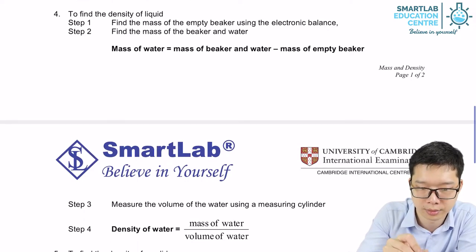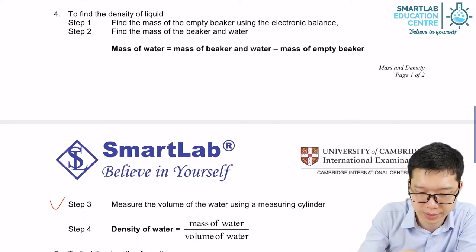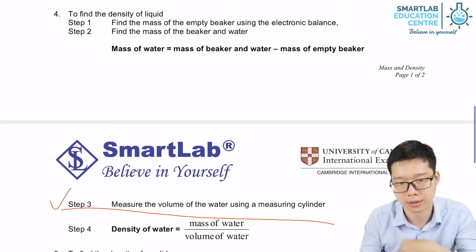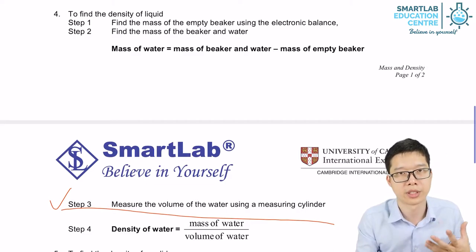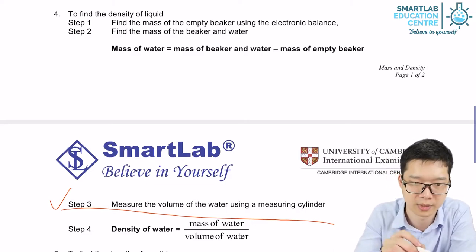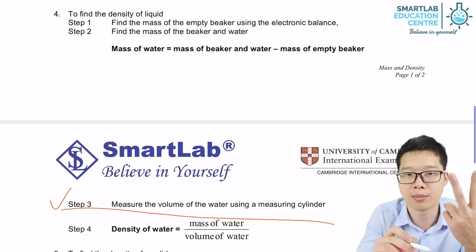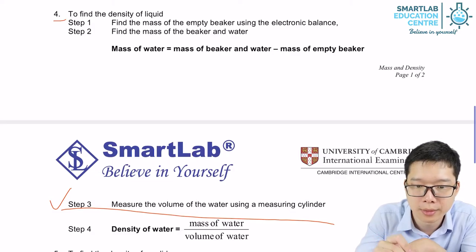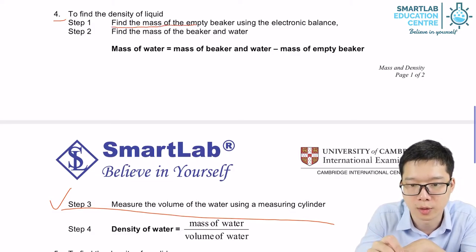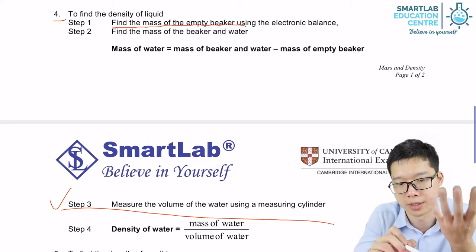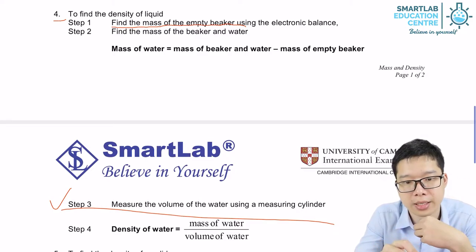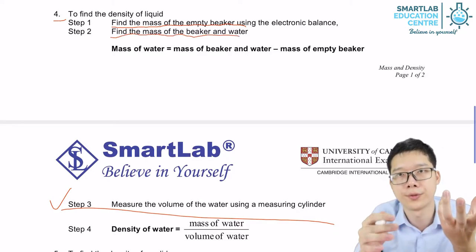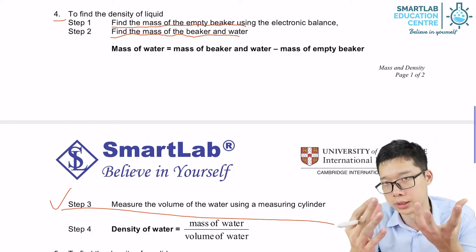Measuring the volume is rather easy. Then how are we going to measure the mass? Two steps. Step number one: we need to find the mass of the empty beaker using a balance. Then we find the mass of the beaker filled with a certain amount of water.